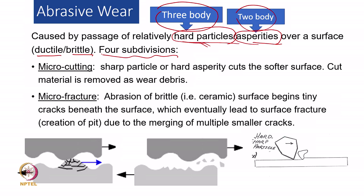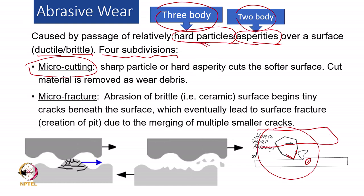The first subdivision is micro cutting — it is like a cutting tool going to chip off the soft material. If the hardness is almost equal, there will be little difficulty removing the soft surface. If the surface becomes very hard, the opposing surface incorporating the debris or asperity will be abraded. It depends on which surface is soft — abrasion of that surface will occur. So it is a relative motion between surfaces, and if the asperity is sharp, it will cause micro cutting. Sharp particles or hard asperities cut through the soft surface, and the cut material is removed as wear debris.